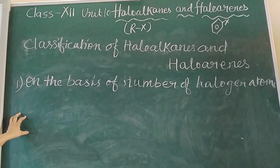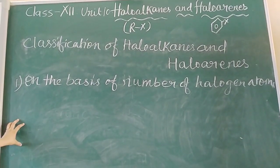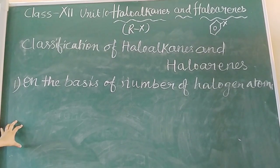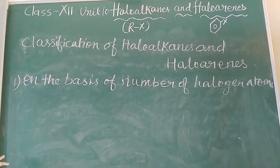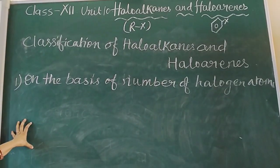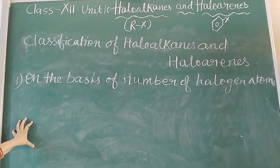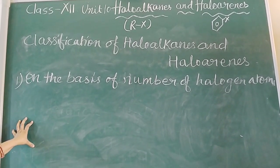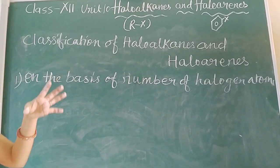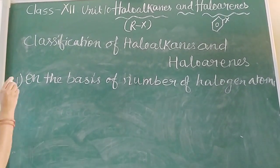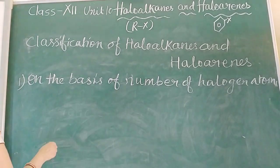We will see the classification of haloalkanes and haloarenes. The first classification is on the basis of number of halogen atoms present in the compound. They are classified as mono-haloalkane, di-haloalkane, tri-haloalkane, tetra-haloalkane, etc. I am explaining this by taking examples.